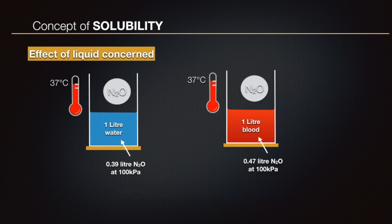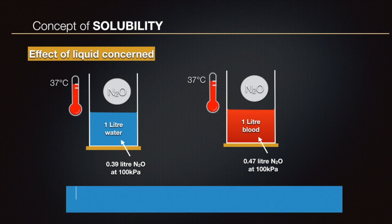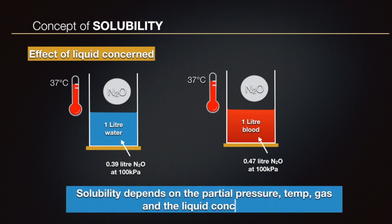Finally, the liquid type must also be specified. As shown here, 390 ml of nitrous oxide dissolves in one liter of water at body temperature, whereas one liter of blood dissolves 470 ml of nitrous oxide under the same conditions. To summarize: solubility depends on the partial pressure, temperature, the gas, and the liquid concerned.